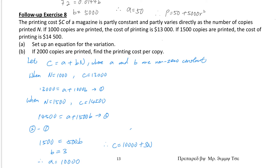Part a: the printing cost c is partly constant and partly varies directly as the number of copies n. So you may set up the equation: c equals a plus bn, where a and b are non-zero constants. You can see some textbooks use k₁ and k₂; I will use a and b instead. Two sets of information: when there are 1000 copies, the cost is 13000 — form the first equation. When there are 15000 copies, the cost is 14500 — second equation.